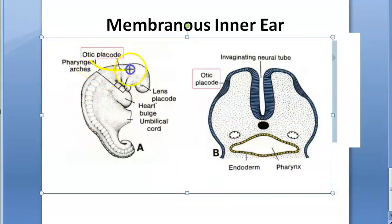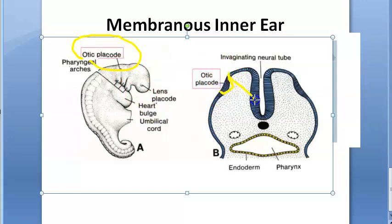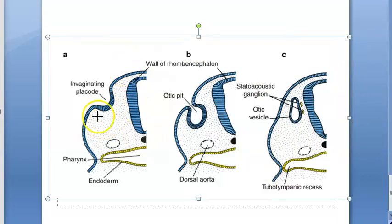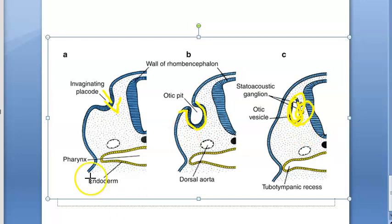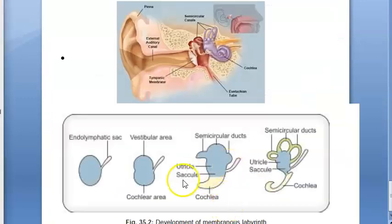An otic placode appears in the ectoderm in the region of the hindbrain. This placode starts invaginating, forming an otic pit which has an opening outside. Then the opening closes and it becomes an otic vesicle, also called the otocyst. All of this will eventually become the membranous labyrinth.